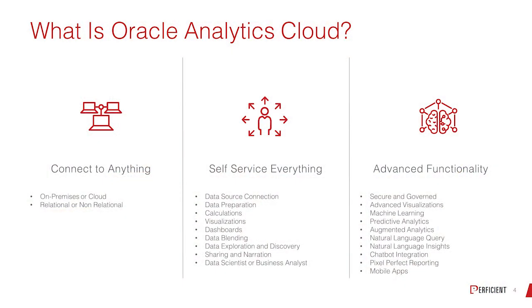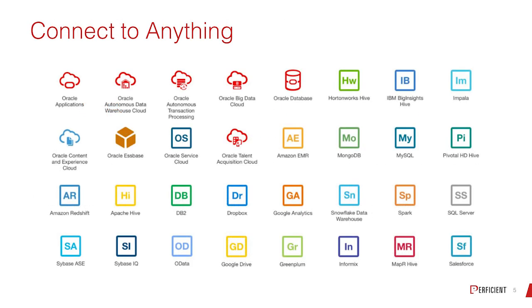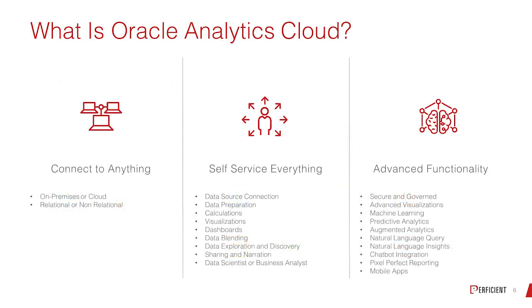What is Oracle Analytics Cloud? Three things. Oracle Analytics Cloud can connect to virtually anything — relational databases, non-relational, on-prem or cloud. Here is the proof, and this isn't even an exhaustive list: MongoDB, Amazon Redshift, DB2, Salesforce, Snowflake — all of these systems Oracle Analytics Cloud can connect to directly for reporting. So there's a lot of flexibility.